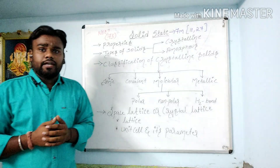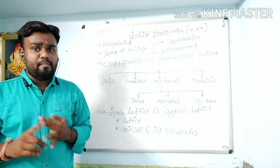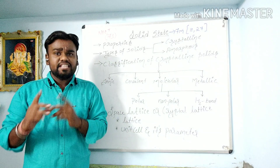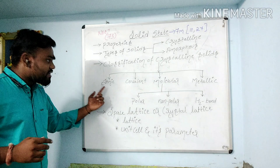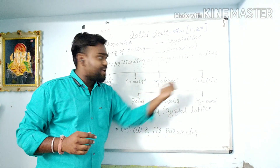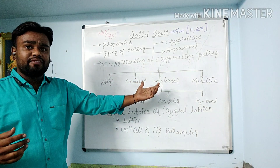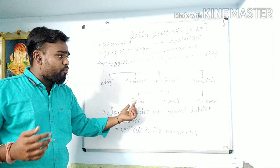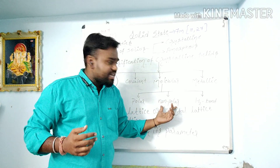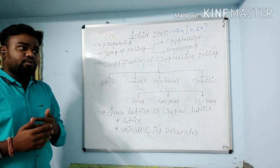Next topic is types of solids. Types of solids are two types: crystalline and amorphous. Then another topic is the classification of crystalline solids — number one: ionic solids, polar solids, molecular solids, and metallic solids. Further, molecular crystalline solids are classified into three: polar molecular, non-polar molecular, and hydrogen bond.